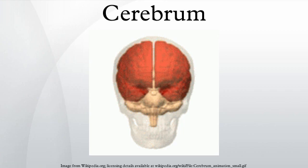In the amniotes, the cerebrum becomes increasingly large and complex. In reptiles, the paleopallium is much larger than in amphibians and its growth has pushed the basal nuclei into the central regions of the cerebrum. As in the lower vertebrates, the gray matter is generally located beneath the white matter, but in some reptiles it spreads out to the surface to form a primitive cortex, especially in the anterior part of the brain.